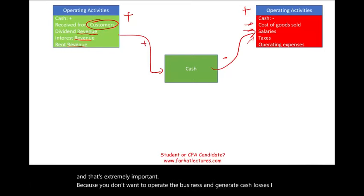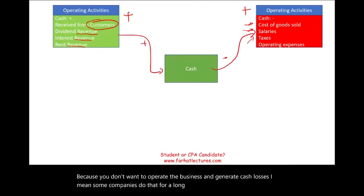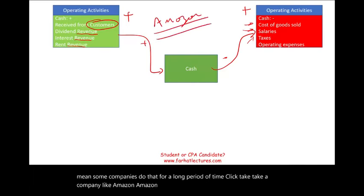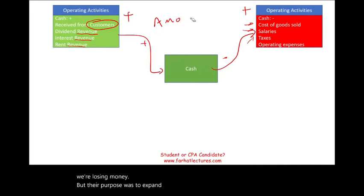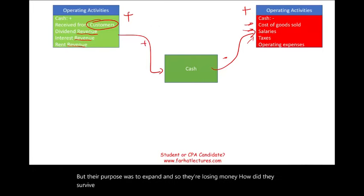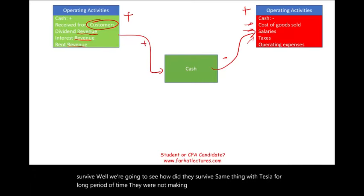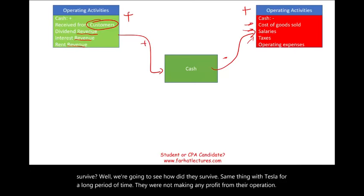Some companies operate at a cash loss for a long period of time. Take a company like Amazon — for almost a decade they were losing money, but their purpose was to expand. If they're losing money, how did they survive? Same thing with Tesla — for a long period of time they were not making any profit from their operation. We will see how they survived.